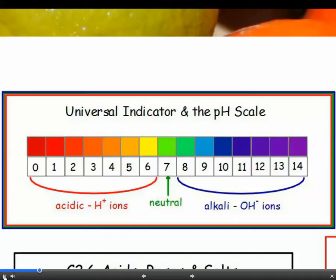Green tells us that the pH is 7, or neutral — the pH of pure water. Red, orange and yellow indicate that the substance is an acid and has a pH below 7. Alkalis have a pH above 7 and turn the indicator blue or purple.